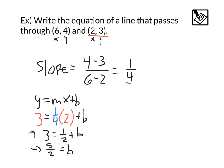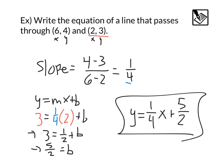Now we've got our slope of 1 fourth, we've got our y intercept of 5 halves. Finally, I can write my equation, y equals 1 fourth x plus 5 halves. And that's my equation.